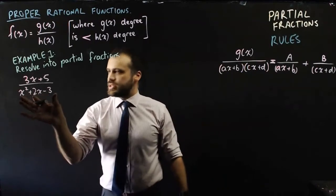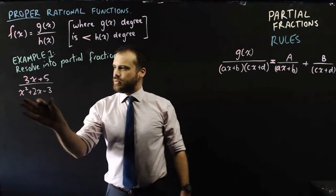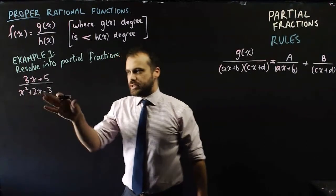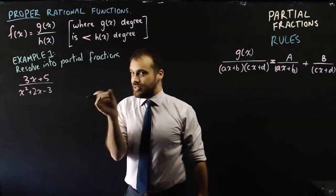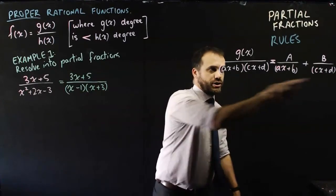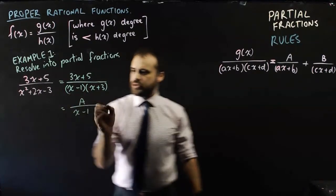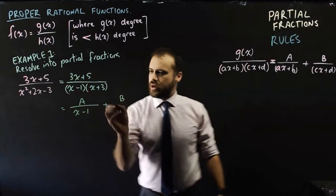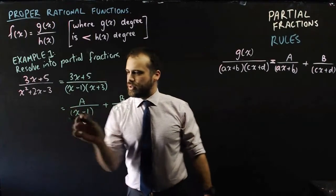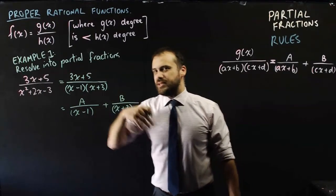For our first example, we're going to take this function and resolve it into partial fractions — cutting it into two fractions. It's a quadratic denominator, so we can easily split x² + 2x − 3 into two factors. Once factorized, we can write it as a over (x − 1) plus b over (x + 3). You might notice we haven't yet considered the 3x + 5 on the top — that's what happens in the next step.